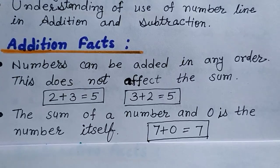The second fact is the sum of a number and 0 is the number itself. For example, 7 plus 0 equals 7.